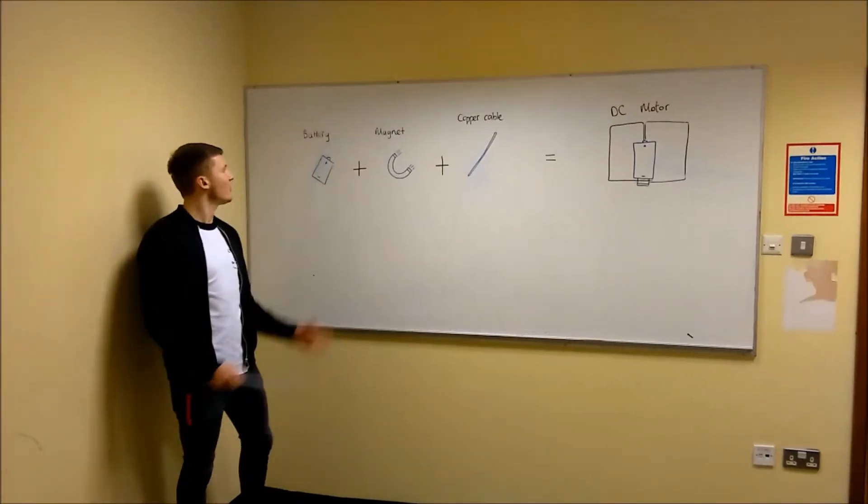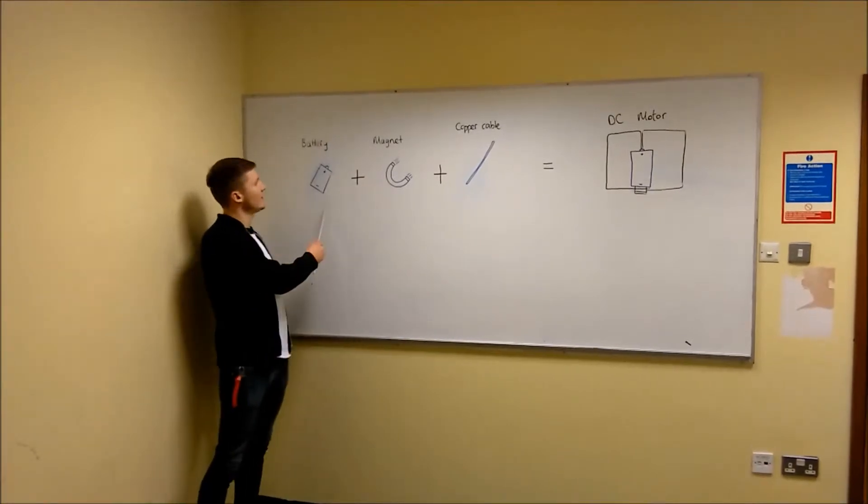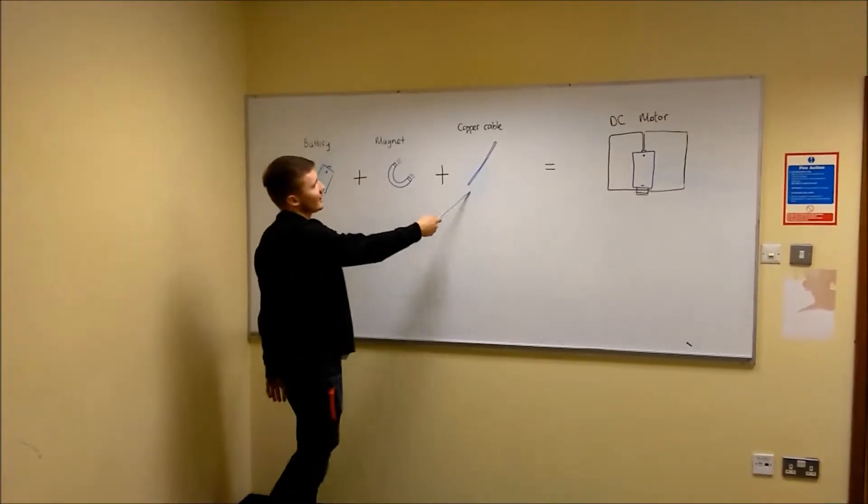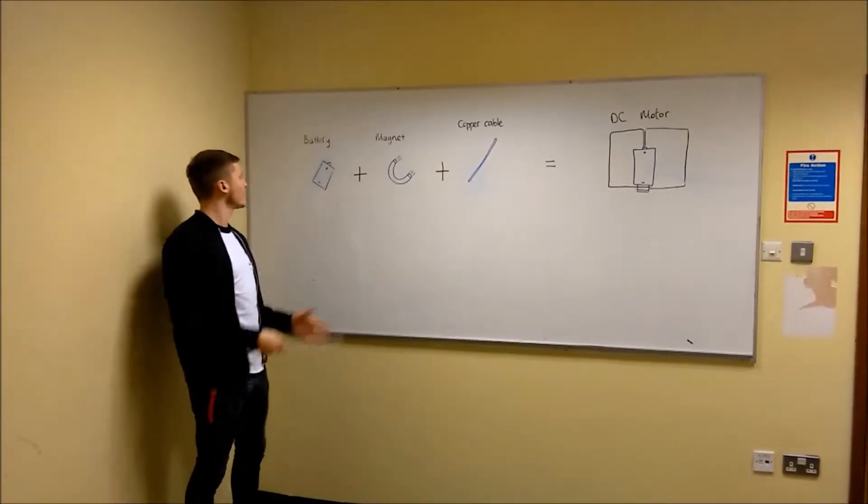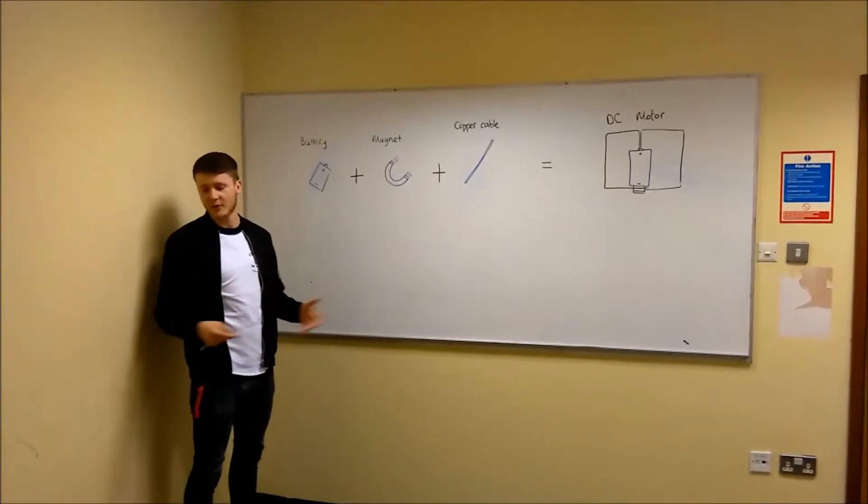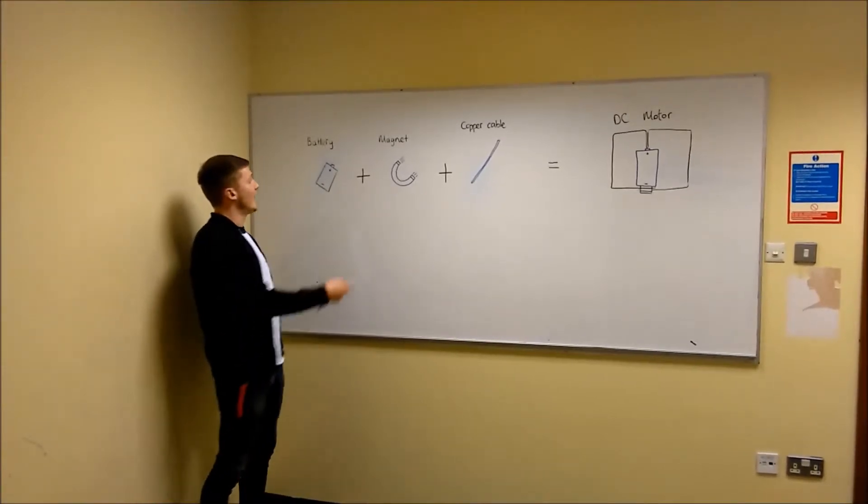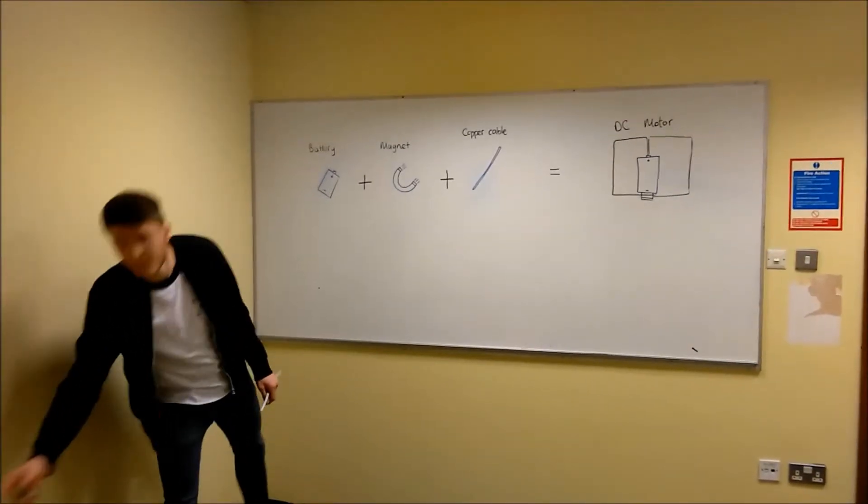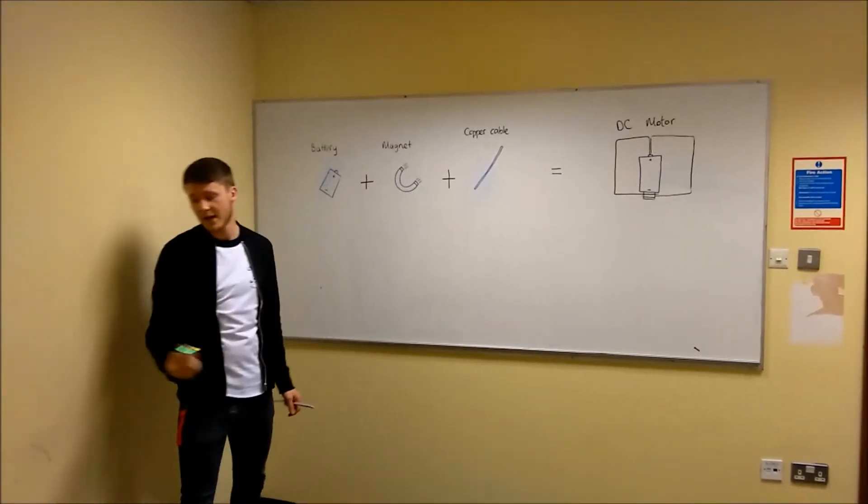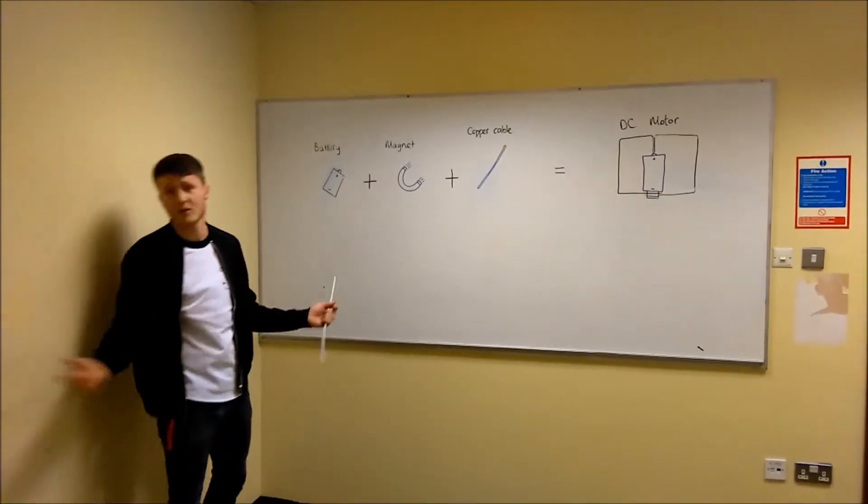Hi guys, so what you are going to need to construct this is a battery, a magnet, and some copper cable. So for the battery, you can use an everyday double A battery which can be found in remote controls or it can be bought in any store. In this case we are using a C type battery, which is perfectly fine as well and can be found in most stores or garages.